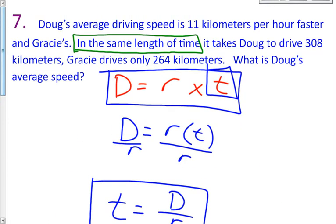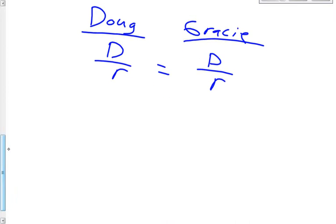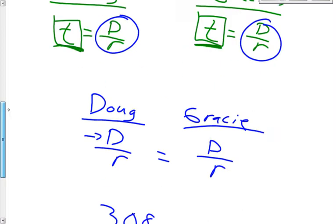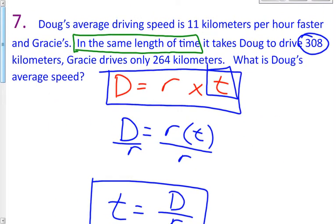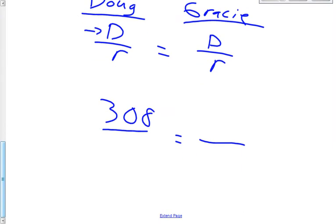It says Doug's average speed is 11 kilometers per hour faster than Gracie's. In the same length, it takes Doug to drive 308 kilometers. So we know that Doug's distance is 308 kilometers. So for the top left part of our equation, Doug's distance is 308. We're going to have this proportion here. Gracie drives only 264 kilometers. So Doug drives a further distance. Gracie only 264. Gracie's distance, that's this variable, is 264.